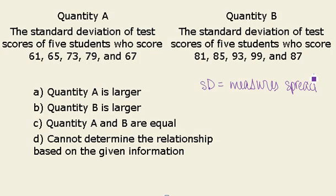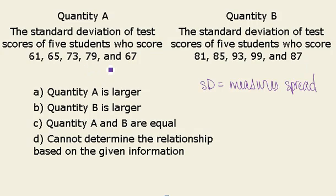When we look at these test scores — 61, 65, 73, 79, 67 — they're considerably lower than the test scores of the other five students who are in the 80s and 90s, which simply means that the average or mean of Quantity B will be greater than the average or mean of Quantity A.